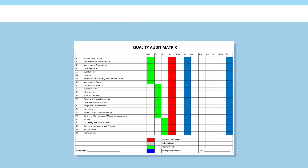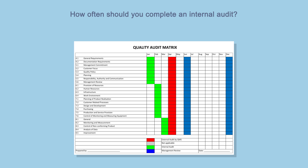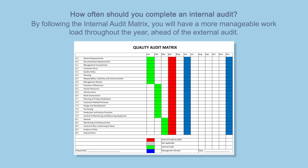How frequently should an internal audit take place? This is down to you. Internal audits can either be carried out routinely, as shown on the internal audit matrix supplied by QMS, or more sporadically, to fit around other commitments. By following the internal audit matrix, you will have a more manageable workload throughout the year, ahead of the external audit.